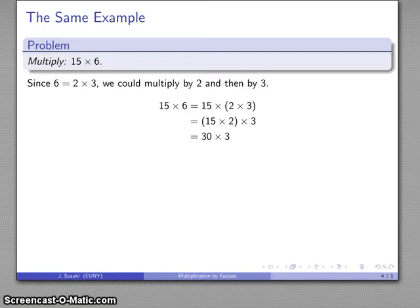Times 3, that's an easy multiplication to do. It's going to be 90. And my corresponding arrow diagram looks very similar. Times 2, times 3, and altogether multiplied by 6.